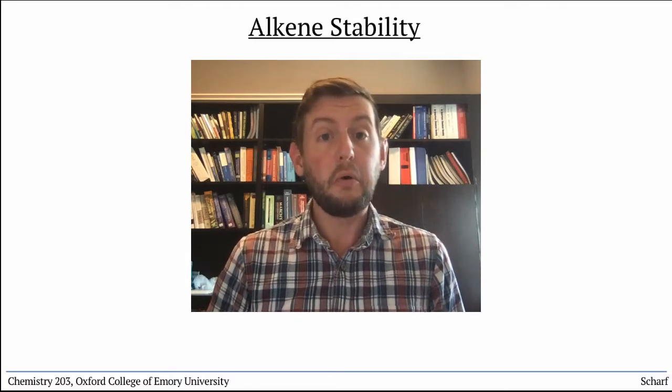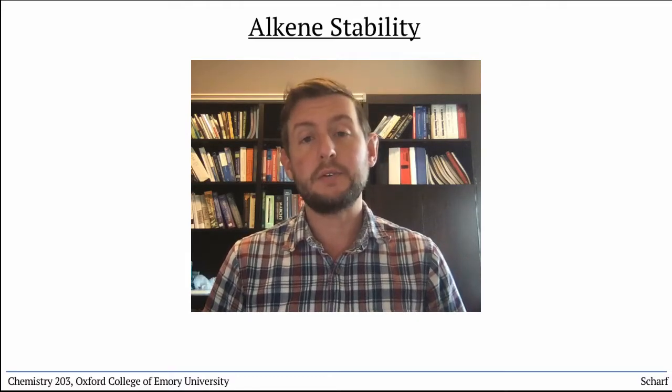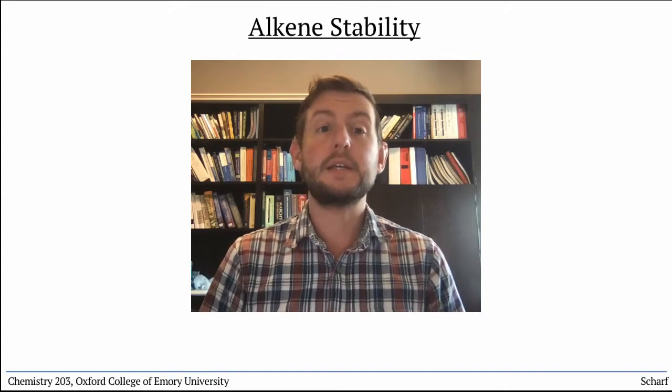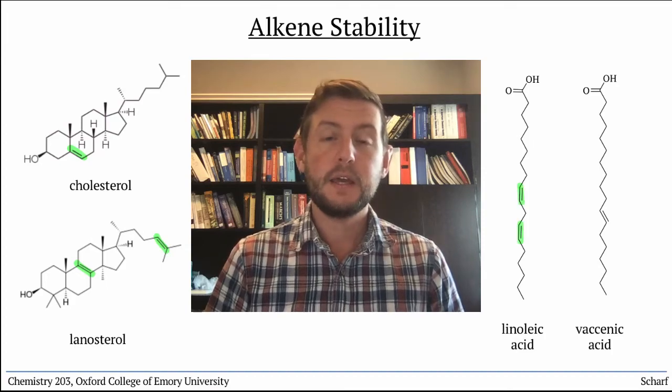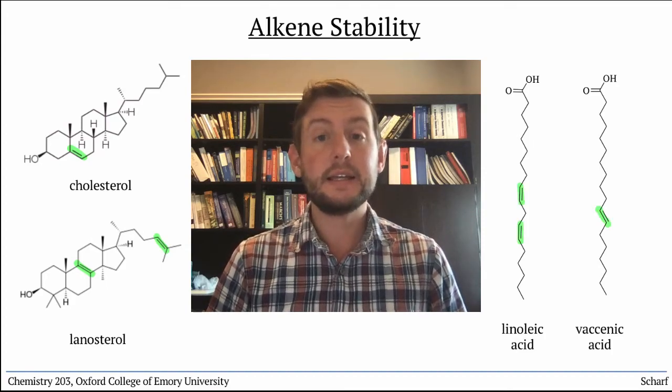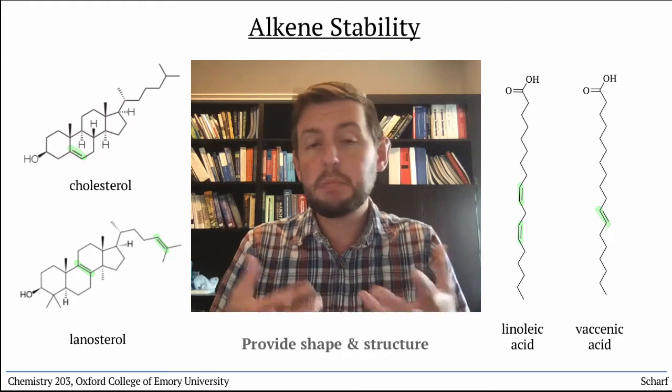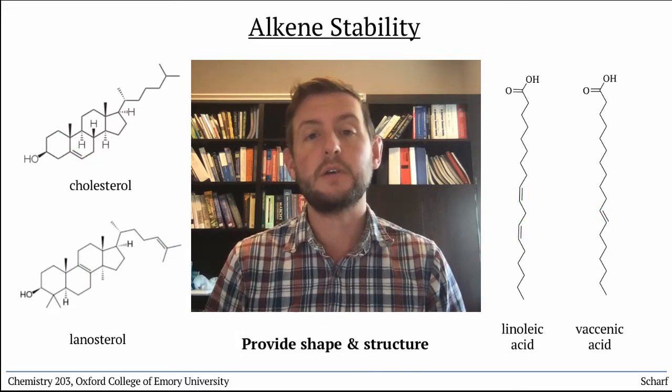Alkenes are, on the whole, generally pretty stable molecules. They're found ubiquitously in biology, especially in steroids and fatty acids. Because of their rigidity and lack of free rotation, they provide shape and structure to molecules.